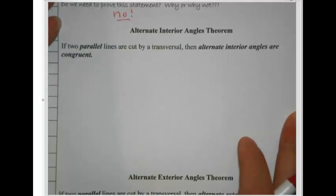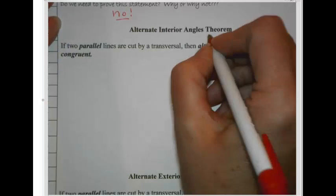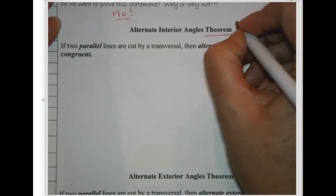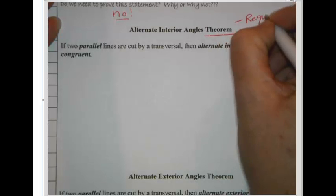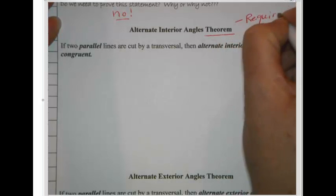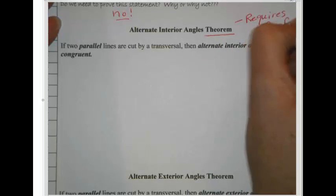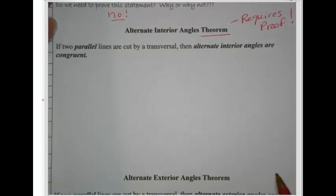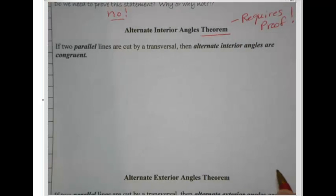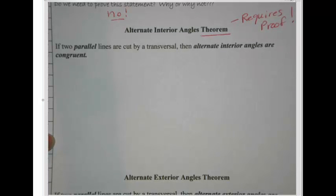That being said, the alternate interior angles theorem is named a theorem specifically because it requires proof. Whether that proof has already happened — and it has — we're just going to recreate it here, or we just have to take the challenge to prove it. We call it a theorem because we're requiring that it be proven. So let's go ahead and build our proof.